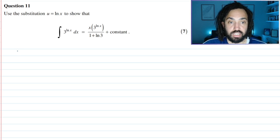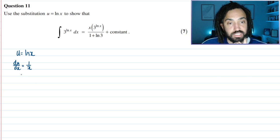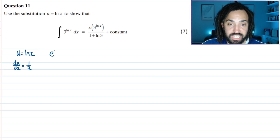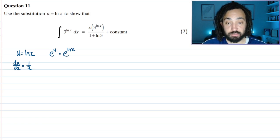We have u equals ln x. If I were to differentiate this with respect to x, I would get du/dx equals 1/x, which isn't the most helpful. Instead, I'm going to make x the subject of the substitution by making e the base of both sides. We know that e to the ln of something will just cancel out, so we get x equals e^u.